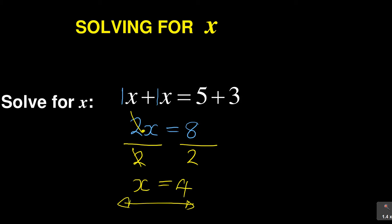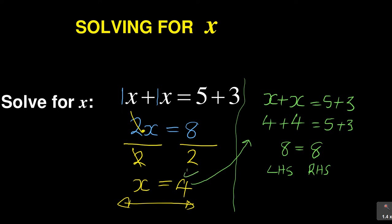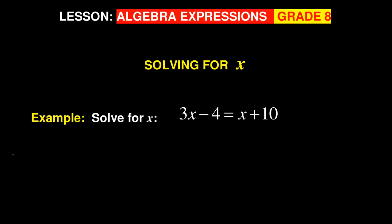The answer I'm getting is 4. To test: the question was x plus x equals 5 plus 3. My value for x is 4, so I substitute: 4 plus 4 equals 5 plus 3. What is 4 plus 4? Eight. What is 5 plus 3? Eight. The left-hand side equals the right-hand side, so my answer is correct.